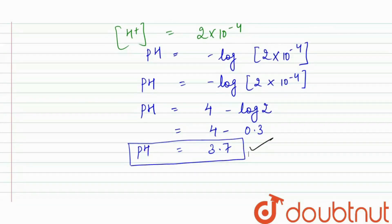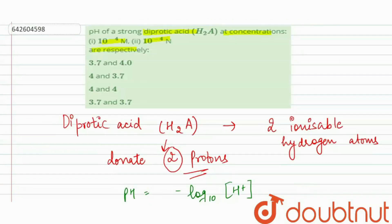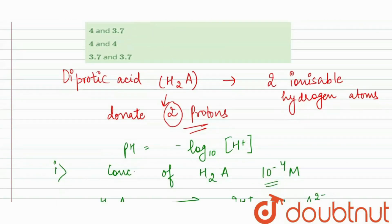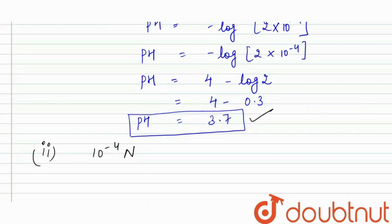In the second case, the concentration is 10⁻⁴ normal. In this dissociation, two protons are involved, so the N factor will be 2.